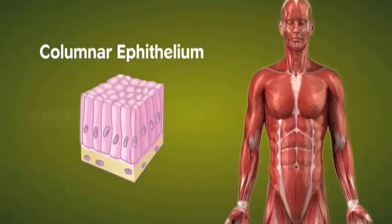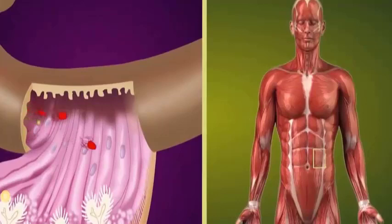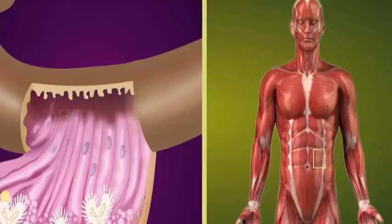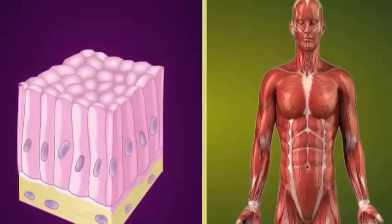Columnar epithelium acts as an impermeable barrier against any bacteria that could be ingested but is permeable to any necessary ions. It is tall and shaped like a column.